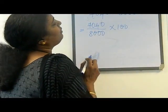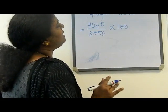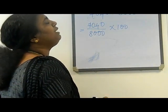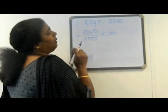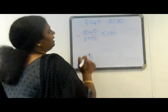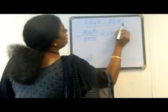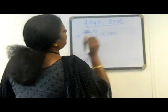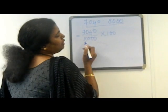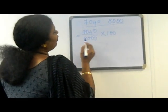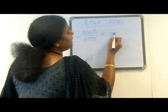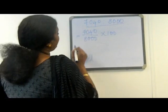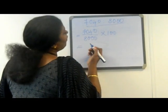We want to compare Ram's expenditure and Kishan's expenditure in percentage form — then only we will know who spends more. First we are converting Ram's expenditure to income: that means 7040 to 8000. We convert this into a fraction: 7040 divided by 8000. For converting to percentage, we multiply by 100, then reduce to lowest form.